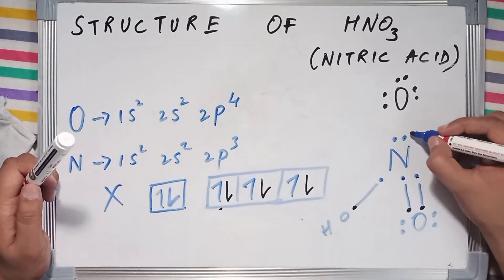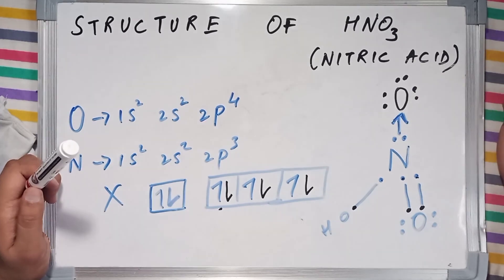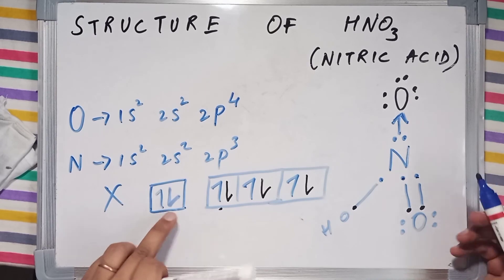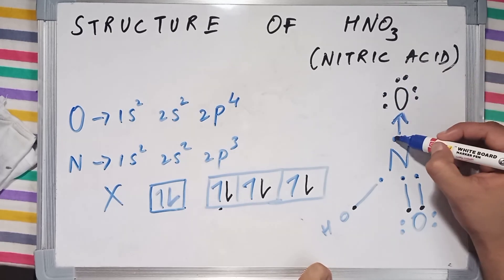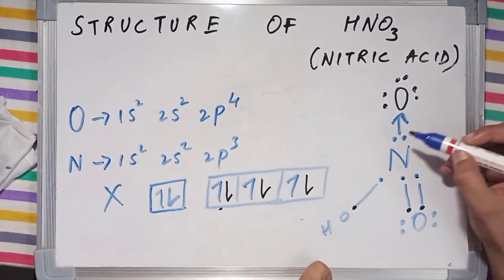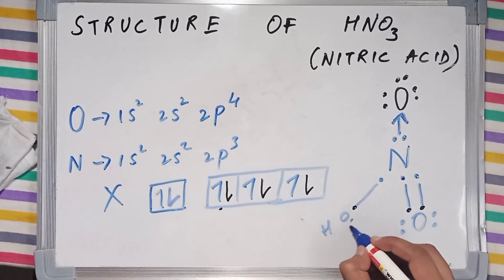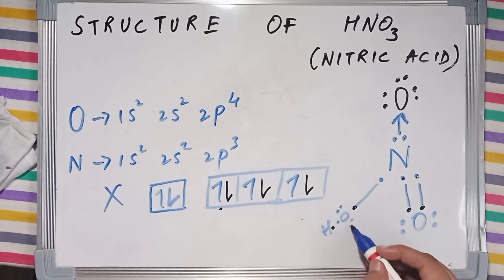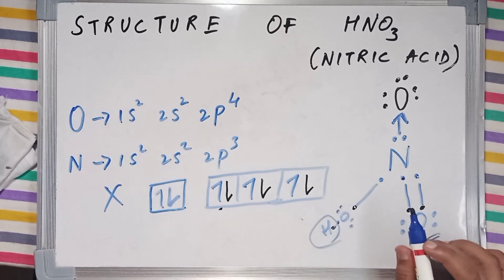What happens instead is that nitrogen's two electrons are simply donated to the remaining oxygen as a coordinate bond. Now oxygen has completed its octet: 1, 2, 3, 4, 5, 6, 7, 8. Nitrogen has also completed its octet: 1, 2, 3, 4, 5, 6, 7, 8. All the oxygens have completed their octets, and hydrogen has completed its duplet: 1 and 2. So this is the final structure of nitric acid.